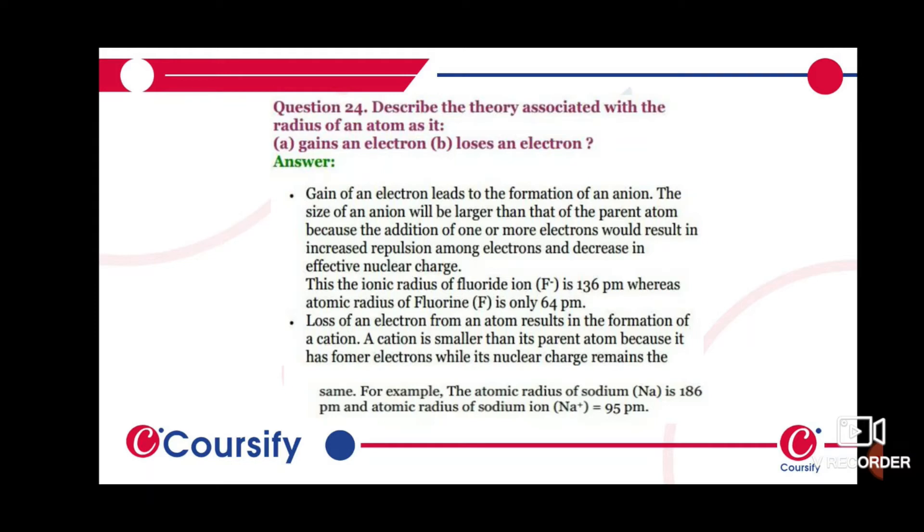A cation is smaller than its parent atom because it has fewer electrons.